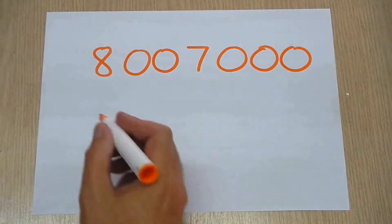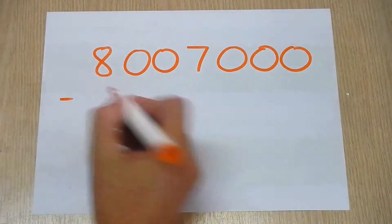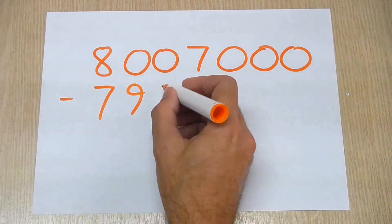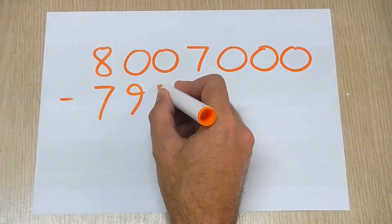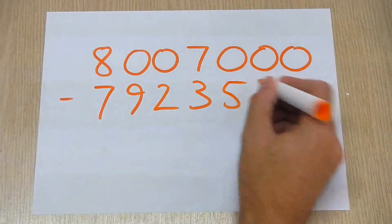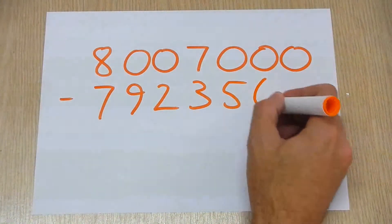What's a number we can subtract from to make it interesting? 7,900,000 and 2, and 23,000, and 568.